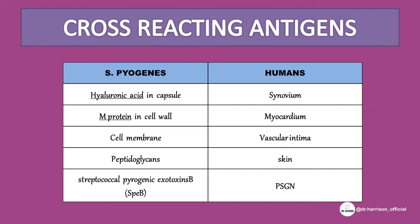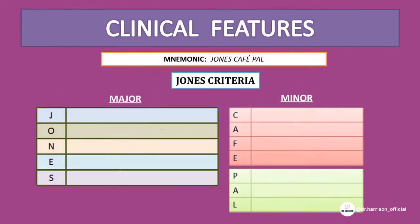Antibodies against streptococcal hyaluronic acid cross-react with synovium in humans. M protein cross-reacts with myocardial cell membrane and vascular endothelium. Peptidoglycans cross-react with skin. Streptococcal pyrogenic exotoxin B cross-reacts with the basal ganglia. Moving on to clinical features, these are given by the Jones criteria, which is used in diagnosis of RHD, easily remembered by the mnemonic 'JONES CAFE PAL'.